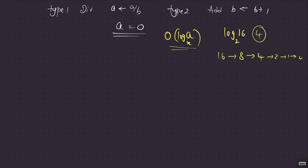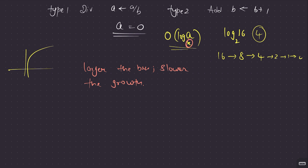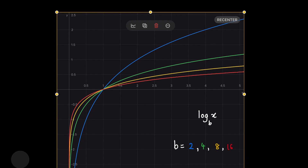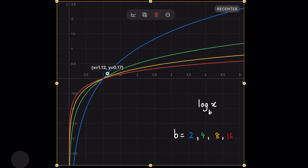Now there's a key property of logarithms: the larger the base, the slower the growth of the log function. Looking at a graph of log_b(x) for base values 2, 4, 8, 16 — base 2 grows fastest and base 16 grows slowest. Since this log value represents our number of operations, a larger base means fewer operations to destroy a.